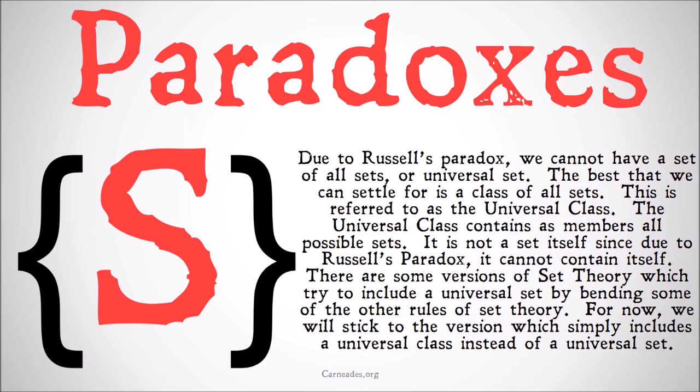Due to Russell's paradox we cannot have a set of all sets, or a universal set. Once we get into the axioms we're going to prove that more rigorously, but for now check out my videos on Russell's paradox for some of the background on why this is the case. The best that we can settle for is the class of all sets — not the class of all classes, because that runs into the exact same problem, but the class of all sets.